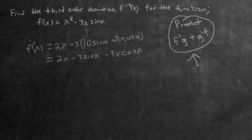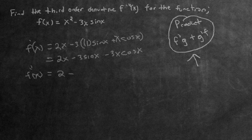Now we just have to find the second order. So f double prime is equal to — we have to take the derivative of the first order. What's the derivative of 2x? That's just going to be 2. What's the derivative of negative 3 sine x? That's just going to be negative 3 cosine x. Now, what's the derivative of the last term? Let's factor out the negative 3. And what's the derivative of x cosine x?